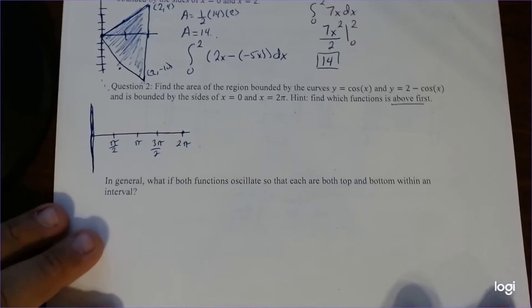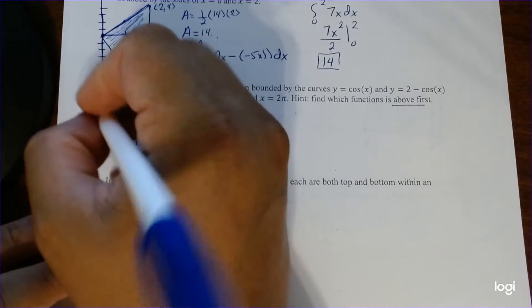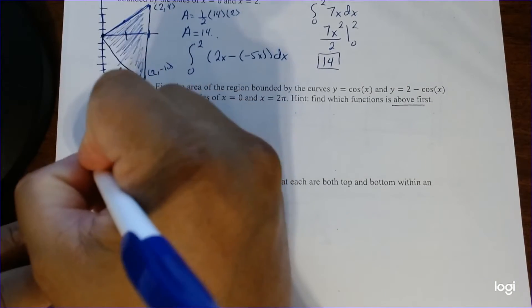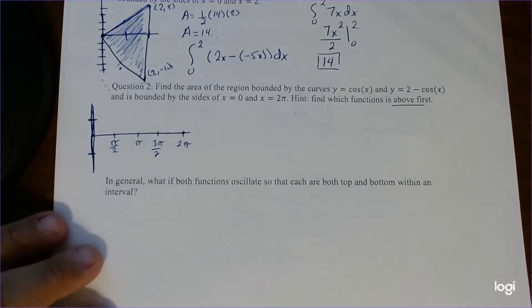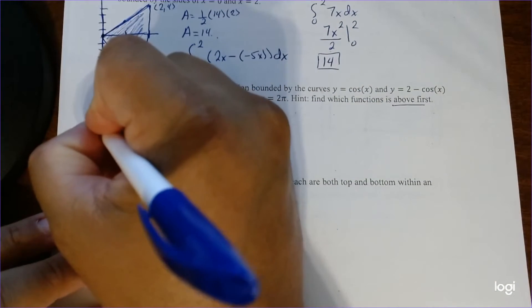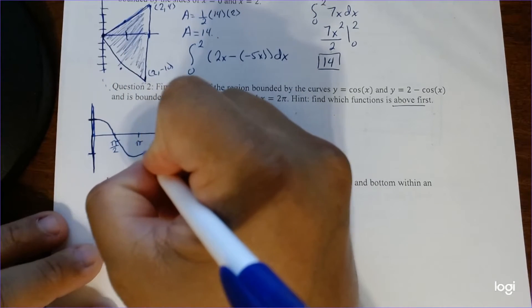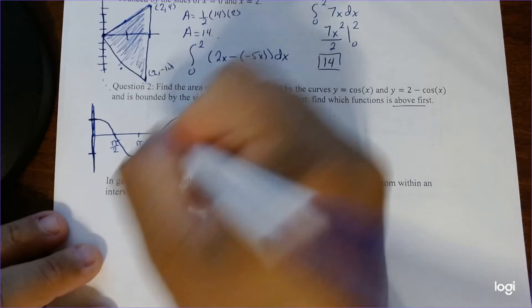So let's just draw the first one, cosine of x. So remember cosine of x starts at 1 and negative 1. So it's bound to be between 1 and negative 1. So cosine of 0 is actually 1. And it just follows this template here. Just going around the unit circle.